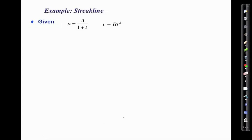You start off doing the same thing that you did for our path line. We end up with our two curves where x minus x_naught equals a times the natural logarithm of (1 plus t) divided by (1 plus t_naught). And then we had y minus y_naught is equal to b divided by 3 times (t cubed minus t_naught cubed).